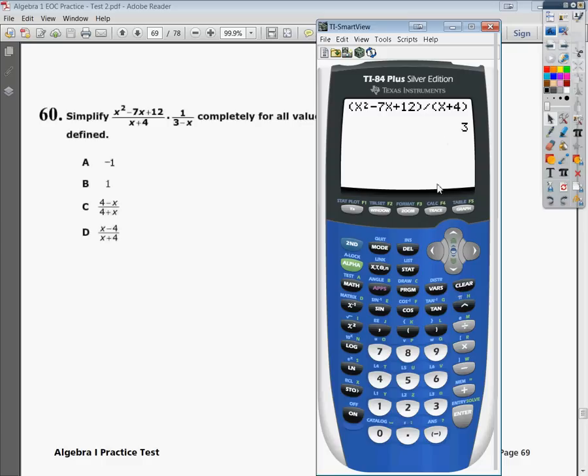That's the first part, and I get 3. So I'm going to keep that 3 in my head, and then on the other side, I'm going to do 1 divided by 3 minus x. And I'm going to get this number, negative 0.14. I'm going to multiply that times 3.